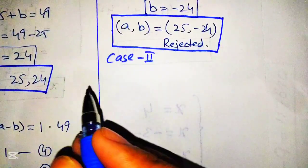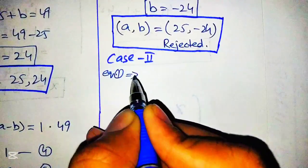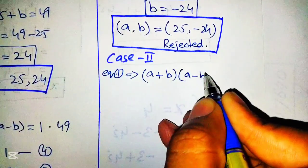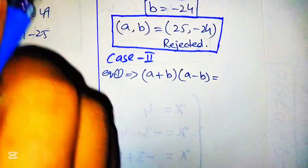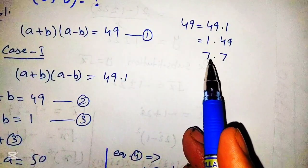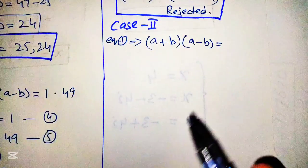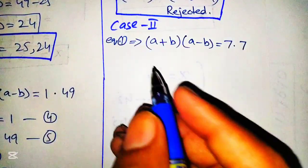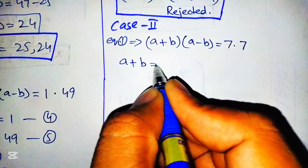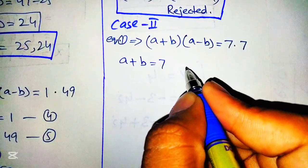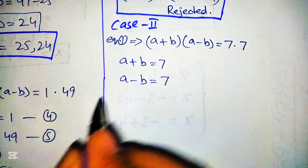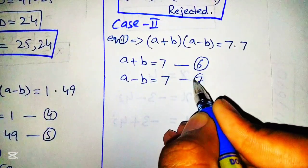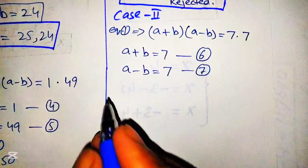Now for Case 3, equation 1 implies: a plus b times a minus b equals 7 times 7. From this we write a plus b equals 7 — equation number 6 — and a minus b equals 7 — equation number 7.